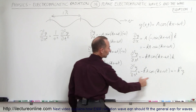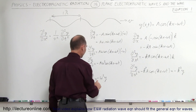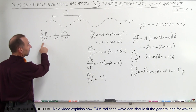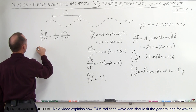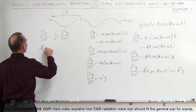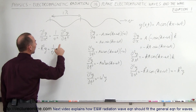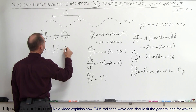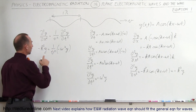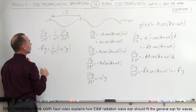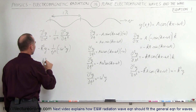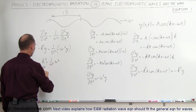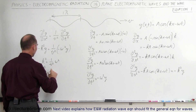Notice that the second derivative with respect to x equals minus k squared y, and the second derivative with respect to t equals minus omega squared y. Plugging into the general wave equation: minus k squared y equals 1 over v squared times minus omega squared y. Since y and the negative sign appear on both sides, they cancel, leaving k squared equals omega squared over v squared, or equivalently k squared over omega squared equals 1 over v squared.